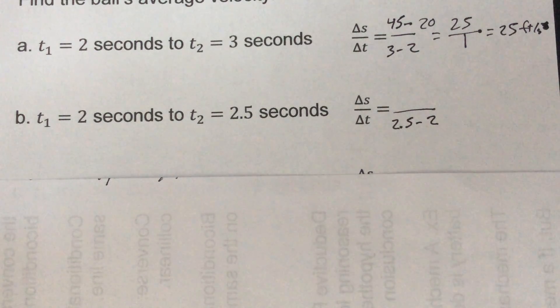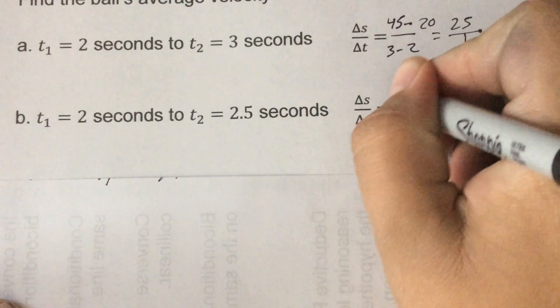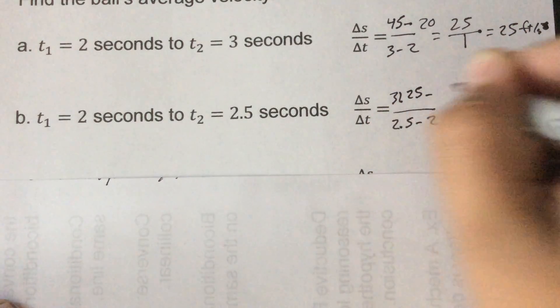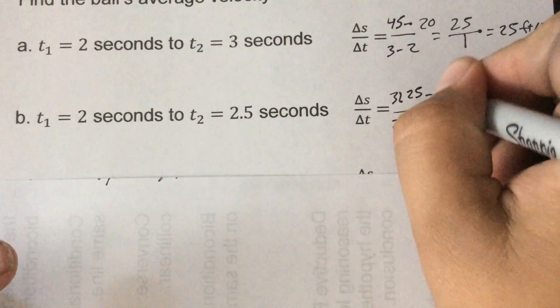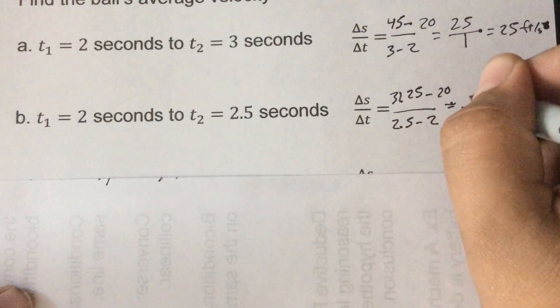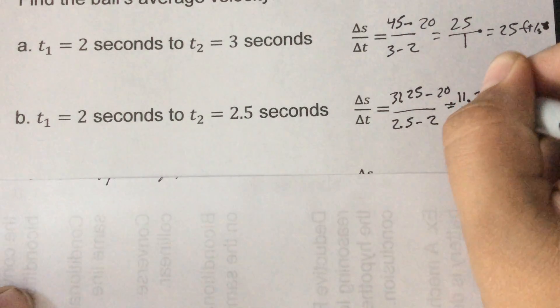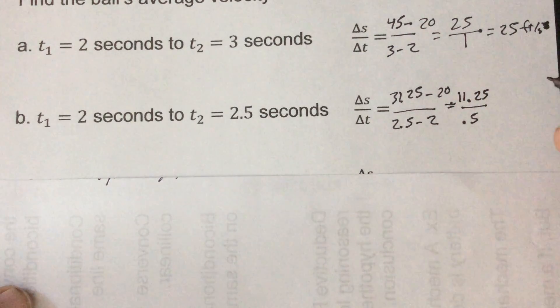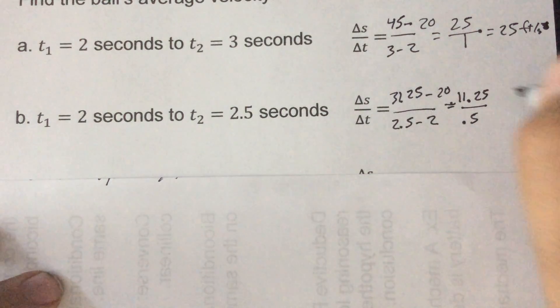So if I do 2.5, I get 31.25. I get 31.25 for the answer. Well I already did two seconds, I know that's 20. So I get 0.5 on the bottom and up top I'd have 11.25. So 11.25 divided by 0.5 would end up being 22.5, that'll be feet per second.